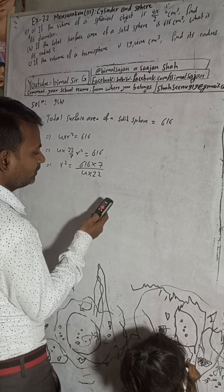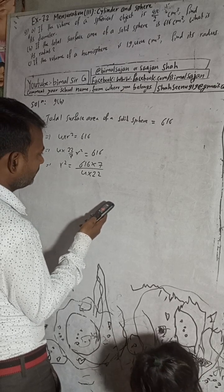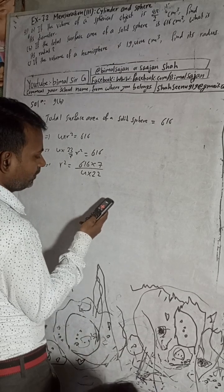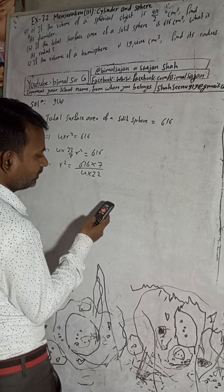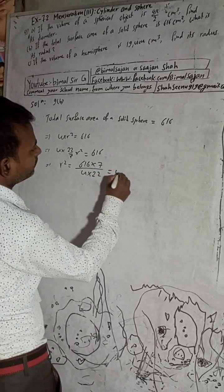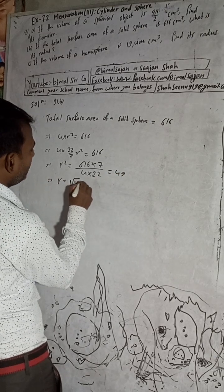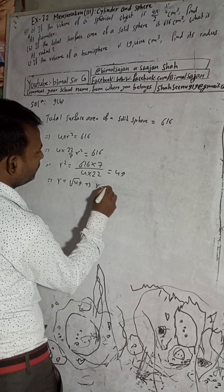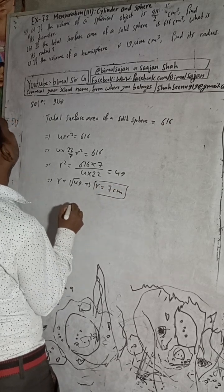So r² = 49, which means r = √49, which implies r = 7 centimeters. The radius is 7 cm. This is the solution to this question.